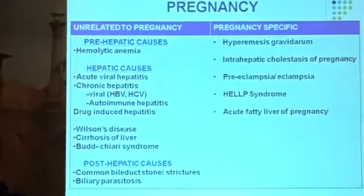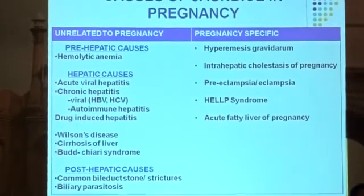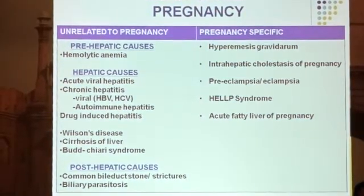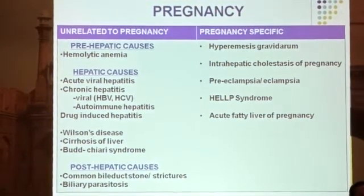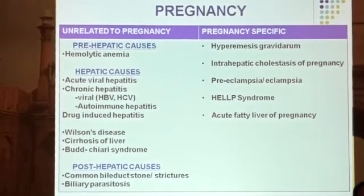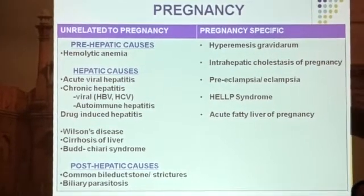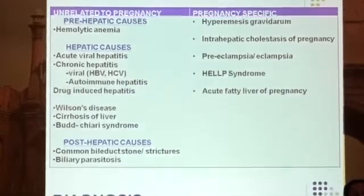The most common causes of jaundice include hepatic causes — basically acute viral hepatitis, which we encounter in day-to-day practice, and chronic hepatitis. Those which are pregnancy-specific are hyperemesis gravidarum, intrahepatic cholestasis of pregnancy, preeclampsia, eclampsia, HELLP syndrome, and acute fatty liver of pregnancy.